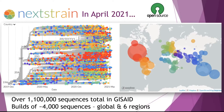To be very clear, what we have on Nextstrain is not a million sequences. We run these every weekday and need them to finish within 24 hours. Rendering a million sequences in your browser would probably crash it. So we trim these down to about 4,000 representative sequences for our global build. We also maintain builds for six different regions of the world, and many groups both within and outside of Nextstrain maintain builds focused on their country, state, canton, region, or town — which are really useful for seeing fine-grained attributes of the pandemic important for outbreak response.